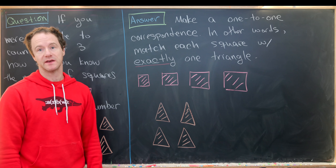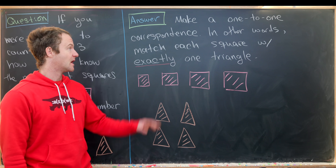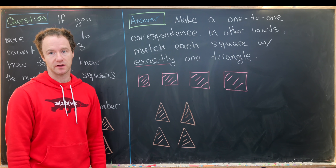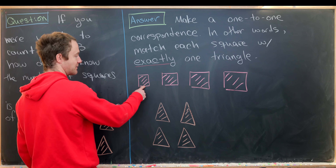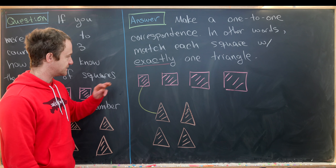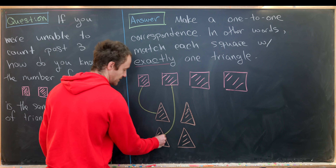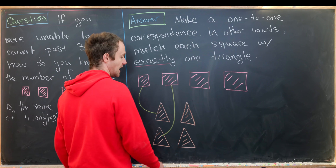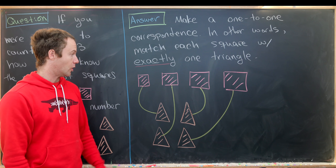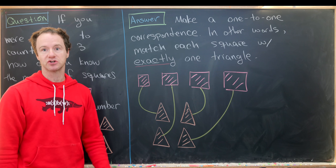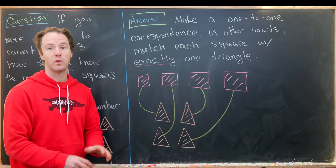The way to do it is to make a one-to-one correspondence between the set of squares and the set of triangles — a really fancy way of matching each square with exactly one triangle. So we match this square with this triangle, this square with this triangle, and keep going, matching each one. We've matched all of the squares with exactly one triangle, which means we've shown the number of squares is the same as the number of triangles without counting.